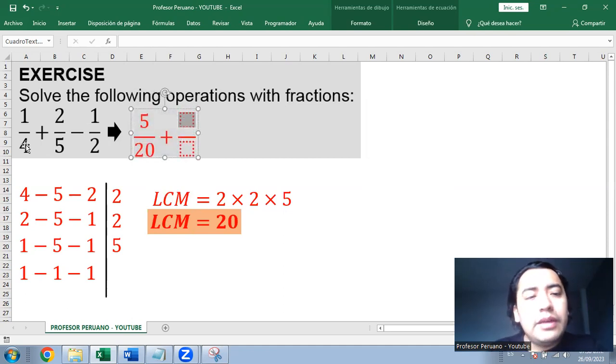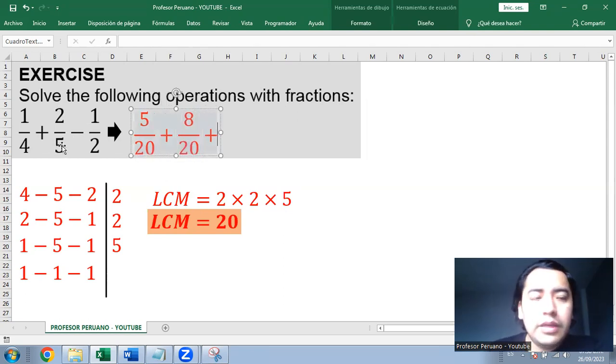Plus 2/5 we can multiply by 4. So it's 2 times 4 is 8 and 5 times 4 is 20. These fractions are homogeneous.